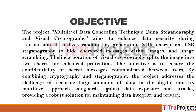The project, multi-level data concealing technique using steganography and visual cryptography, seeks to improve data transmission security. It employs random key generation, XOR encryption, LSB steganography, and picture scrambling to conceal encrypted messages within images. Visual cryptography divides the image into two shares for increased security. The goal is to protect the confidentiality of secret messages sent between users, addressing the difficulty of safeguarding vast amounts of data by integrating cryptography and steganography for a strong solution preserving data integrity and privacy.